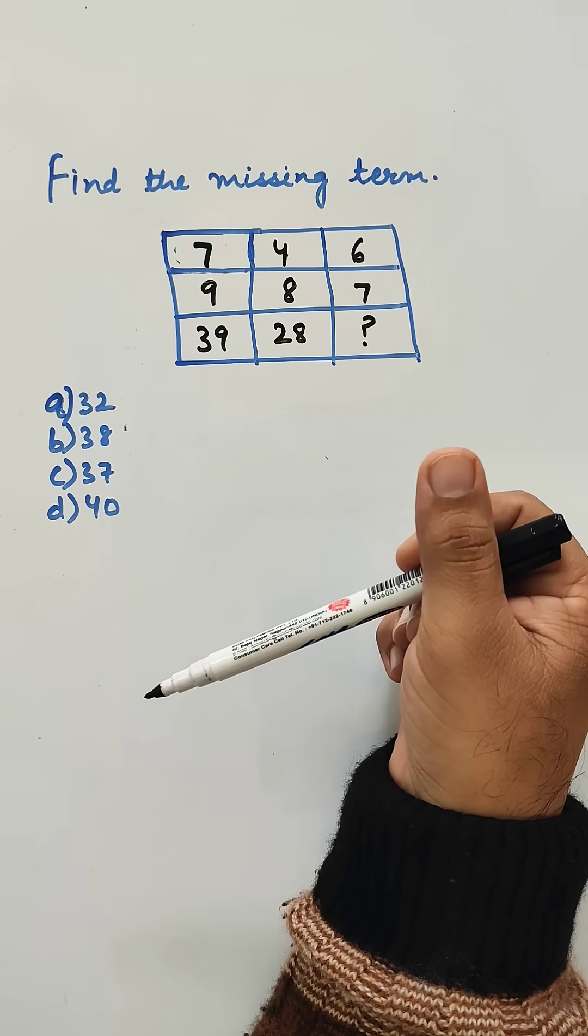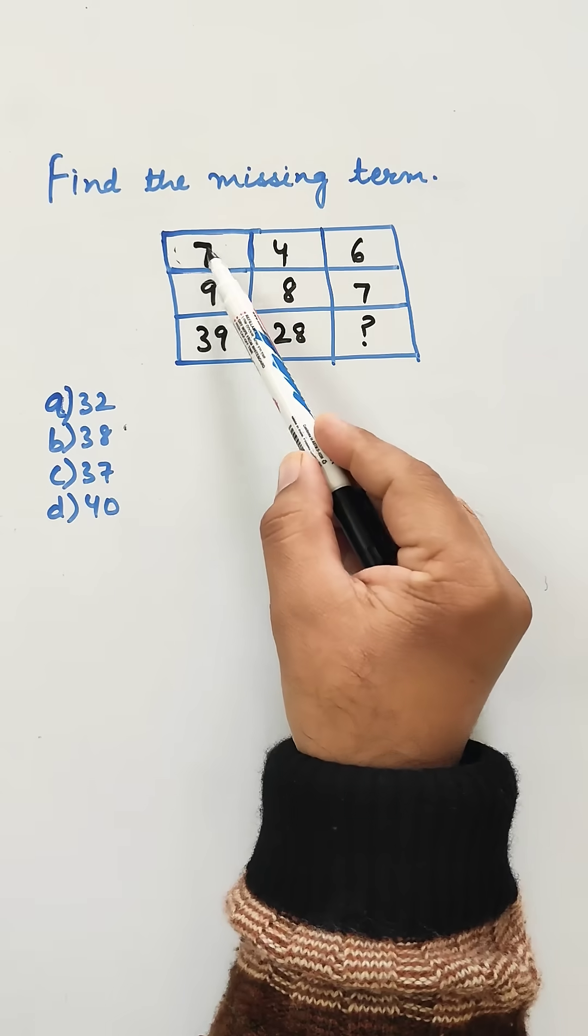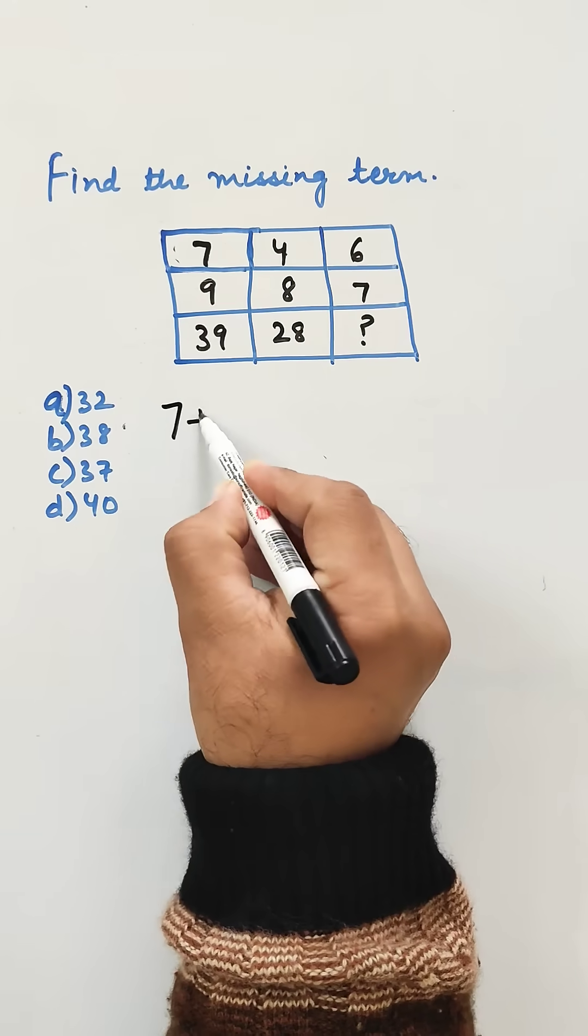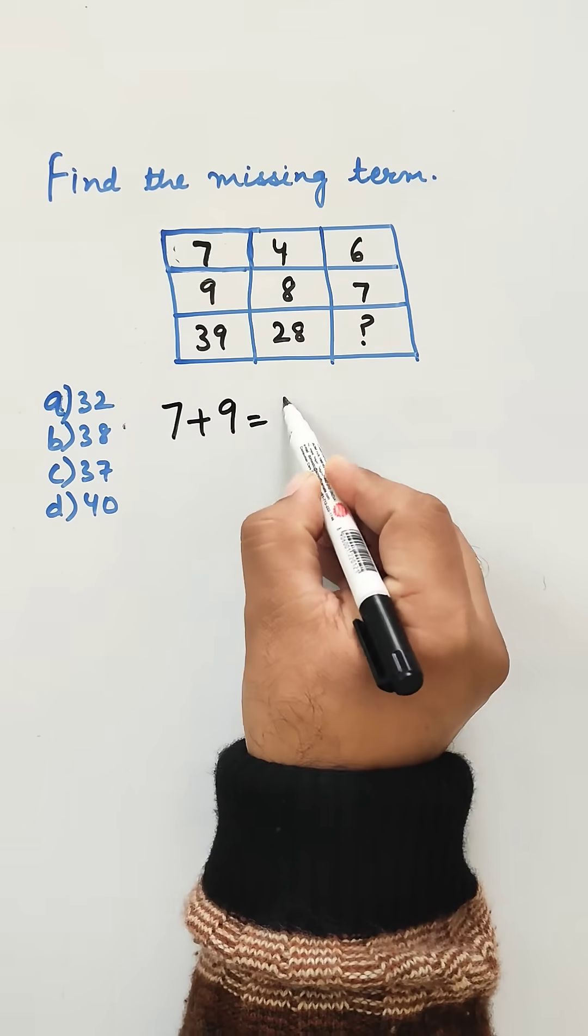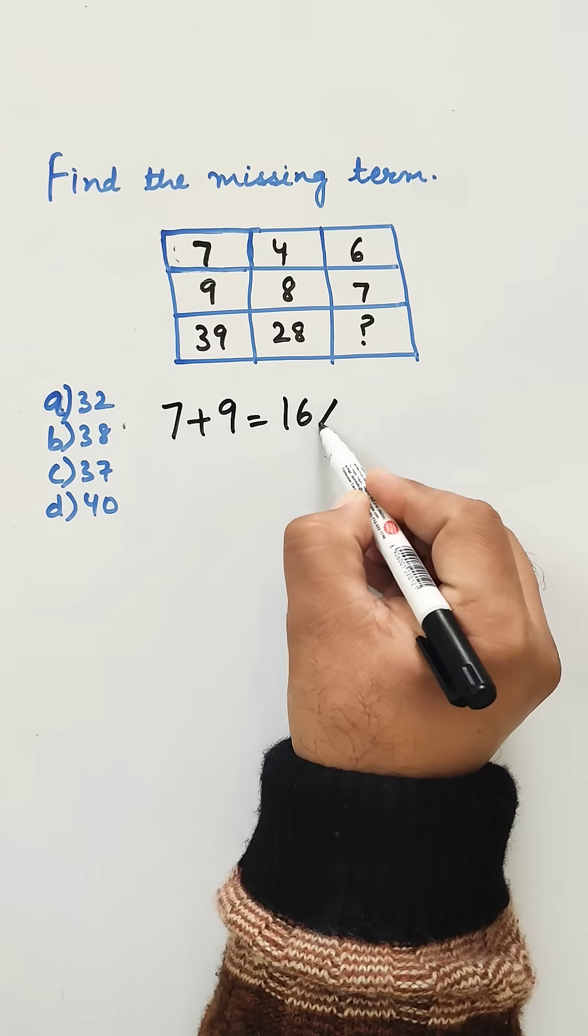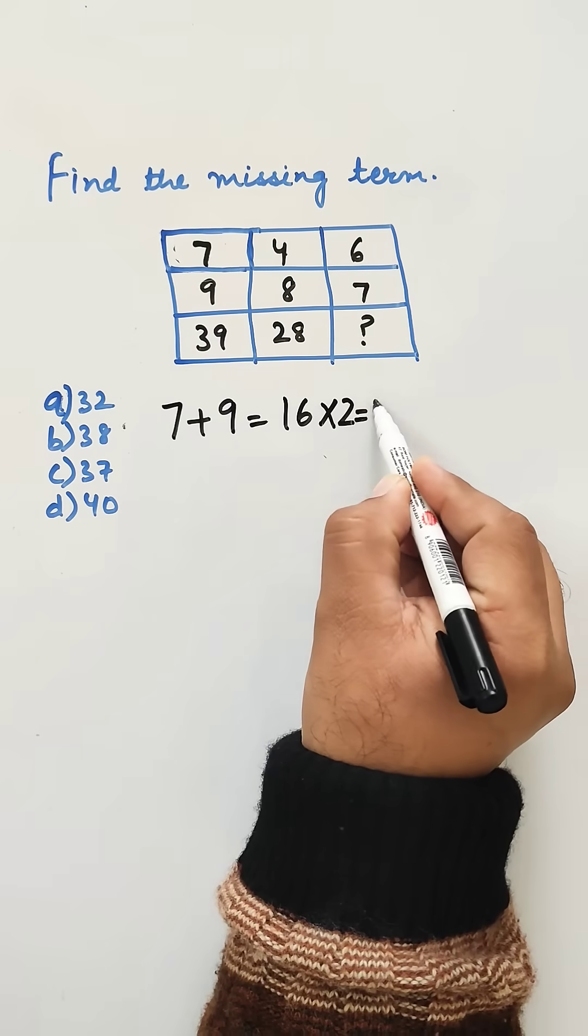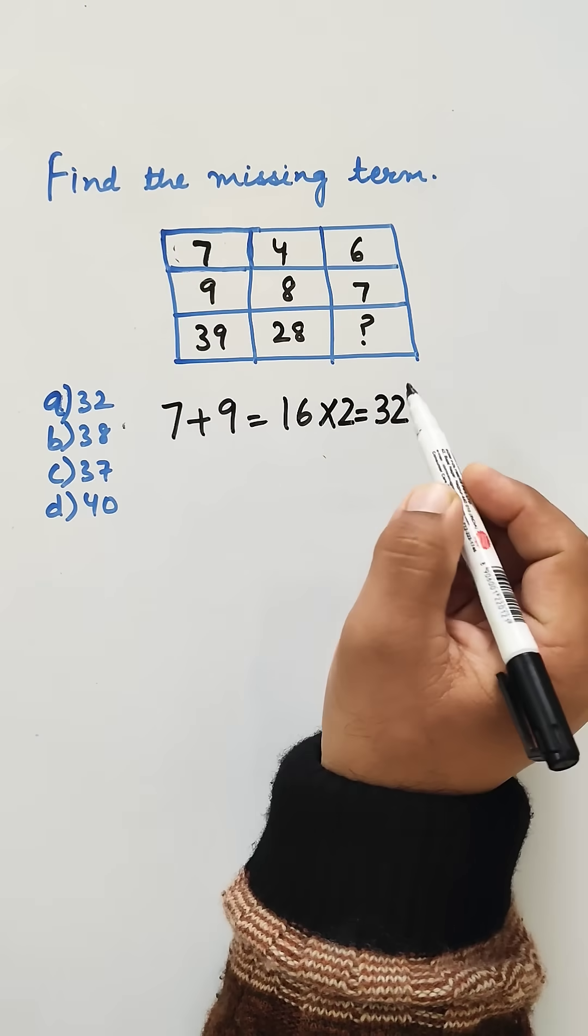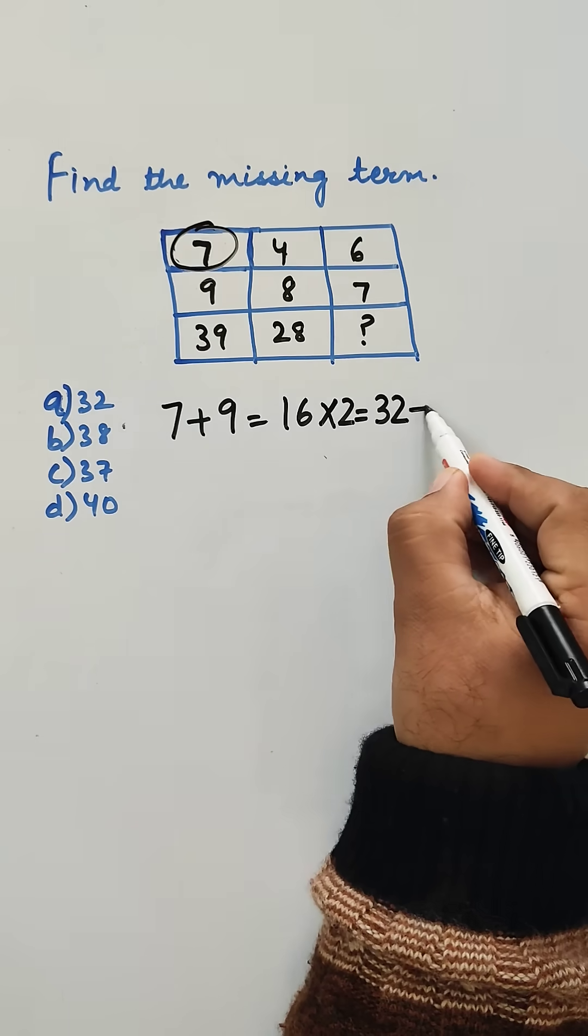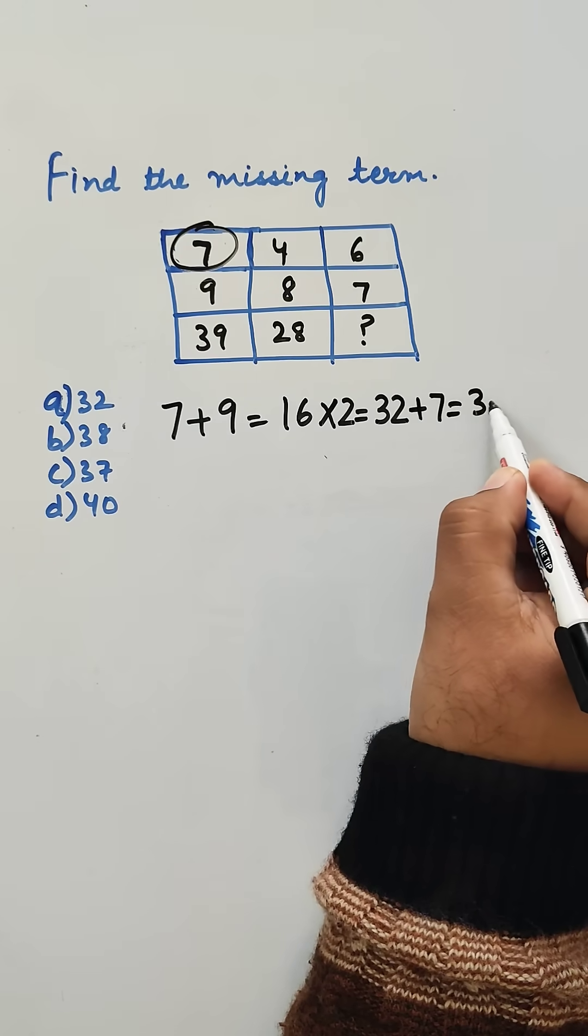Let us start with the column-wise approach. If we take 7 and 9, 7 plus 9 equals 16. If we multiply it with 2, we get 32, and if we add this 7, we get 39.